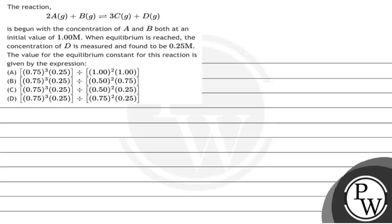Let's have a look at this question which says the reaction 2A plus B gives 3C plus D is begun with the concentration of A and B both at an initial value of 1.00 molars. When equilibrium is reached, the concentration of D is measured and found to be 0.25 molars. The value of equilibrium constant for this reaction is given by the expression.